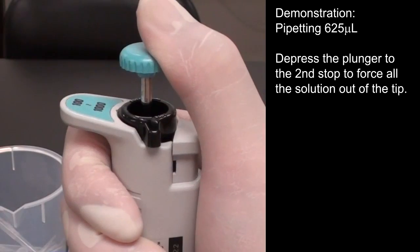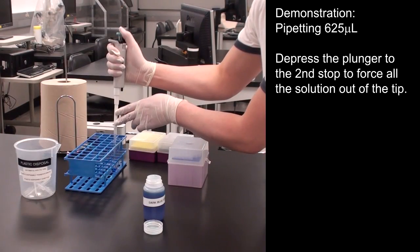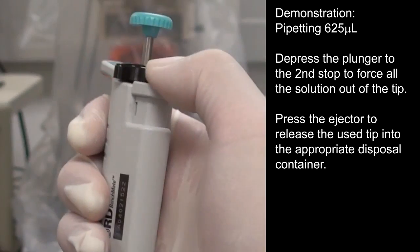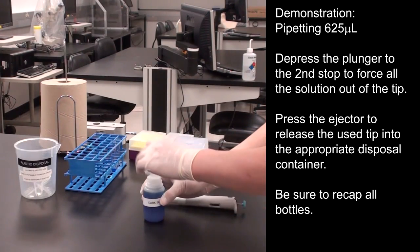Depress the plunger to the second stop to force all of the solution out of the tip. Press the ejector to release the used tip into the appropriate disposal container. Be sure to recap all bottles.